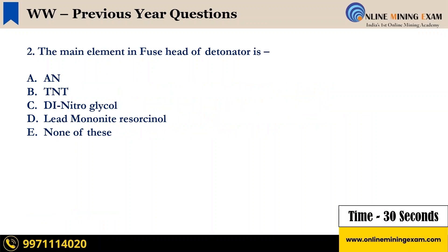The main element in the fuse head of a detonator is: A) AN, B) TNT, C) Dinitroglycisol, D) Lead mononite resorcinol, E) None of these. Your time starts now.